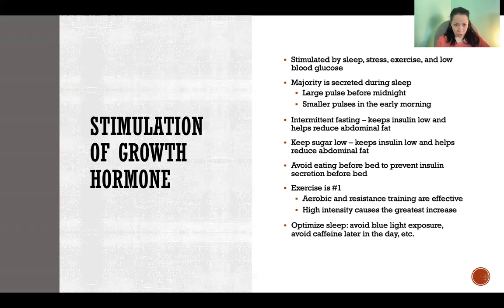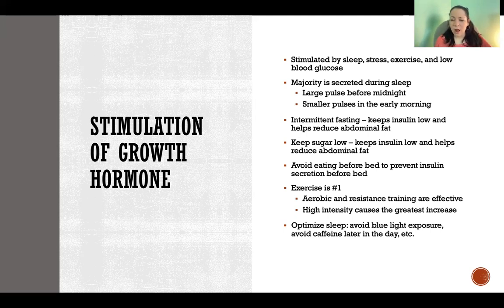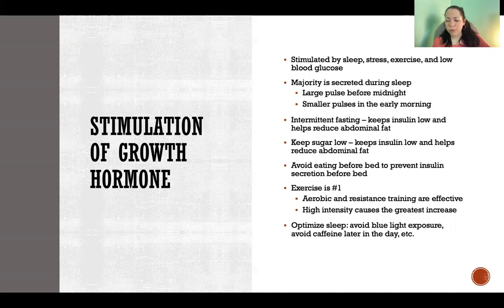Keeping blood sugar low will stimulate growth hormone because insulin and growth hormone are secreted in opposite conditions. If you're eating a lot of sugar or carbohydrates, that's going to keep insulin elevated, which suppresses secretion of growth hormone. Following a low-sugar and even low-carbohydrate diet will help keep insulin low, and will also help reduce abdominal fat, which we know interferes with growth hormone production.